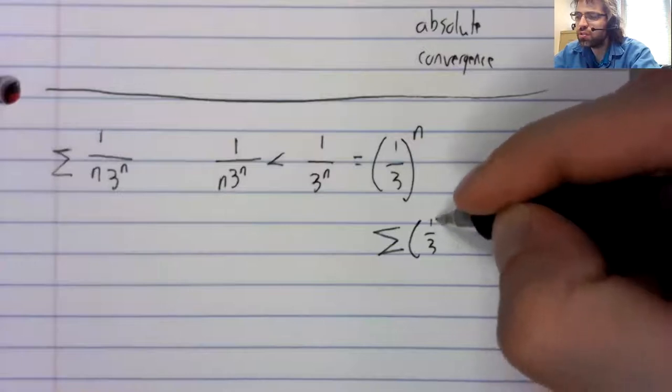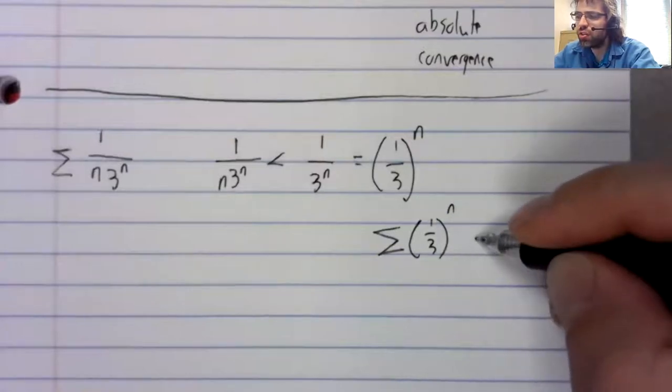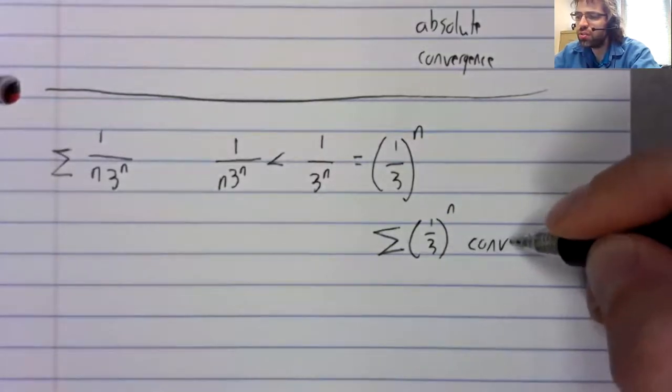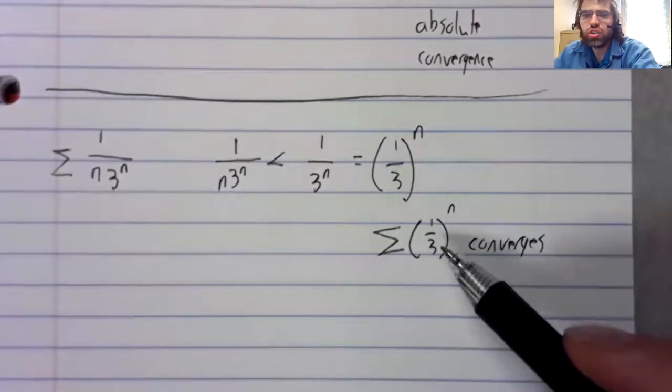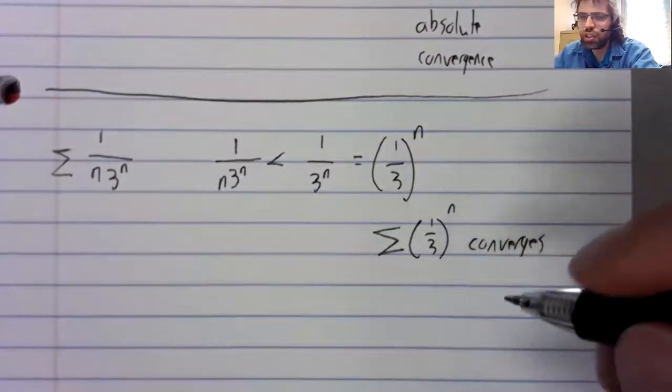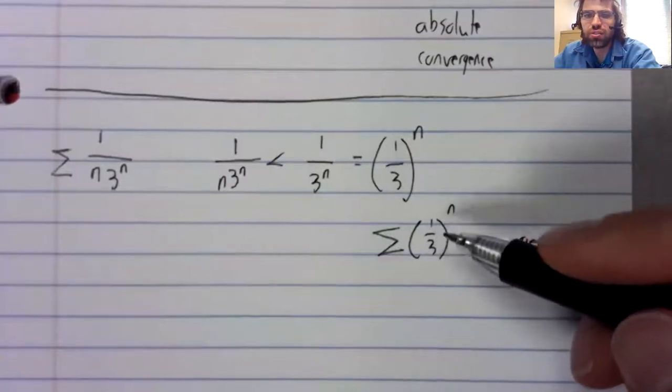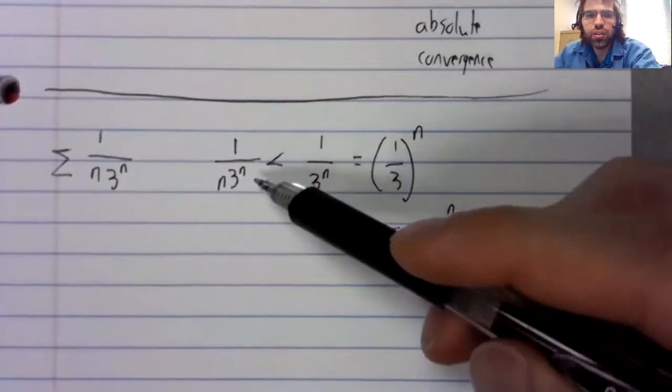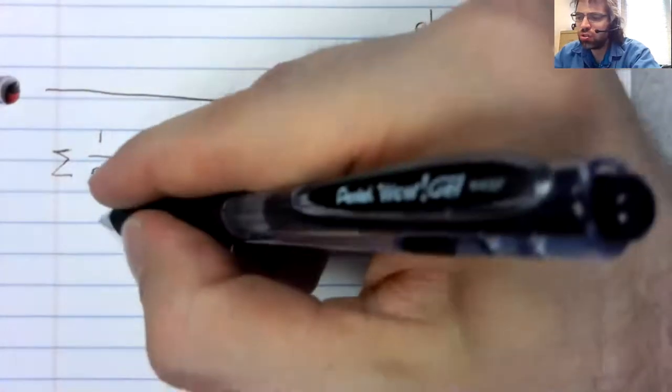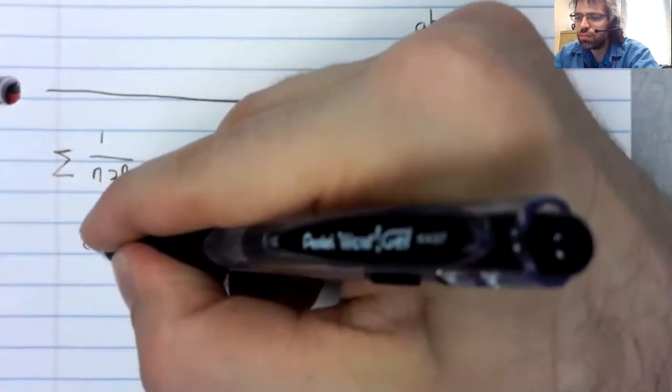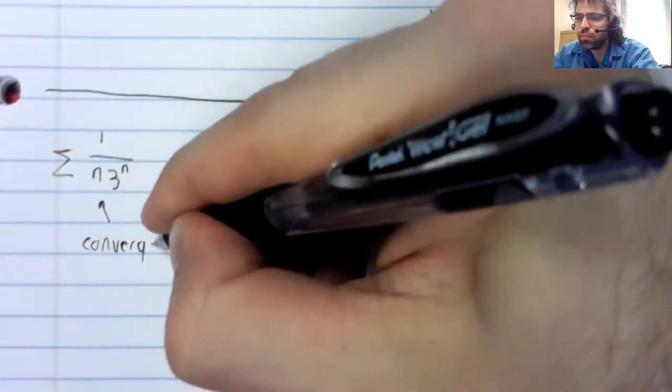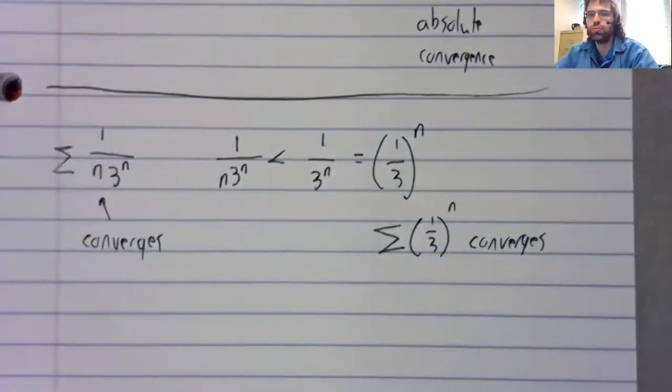This converges. It's a geometric series. One third is less than one, so the smaller series also converges.